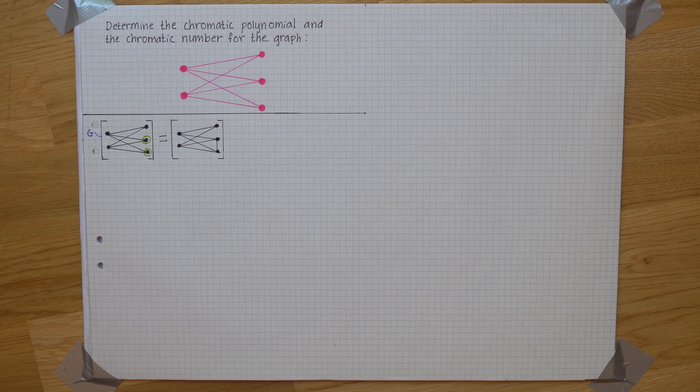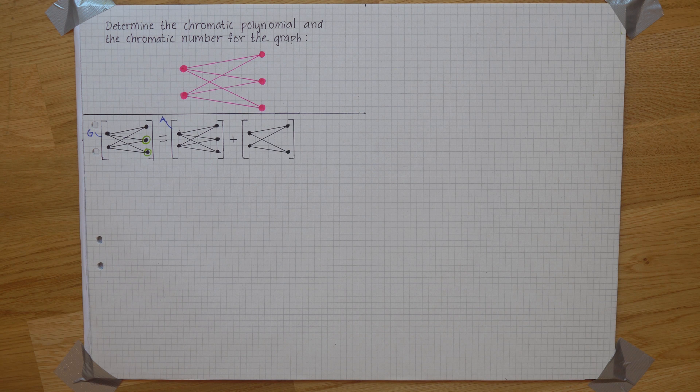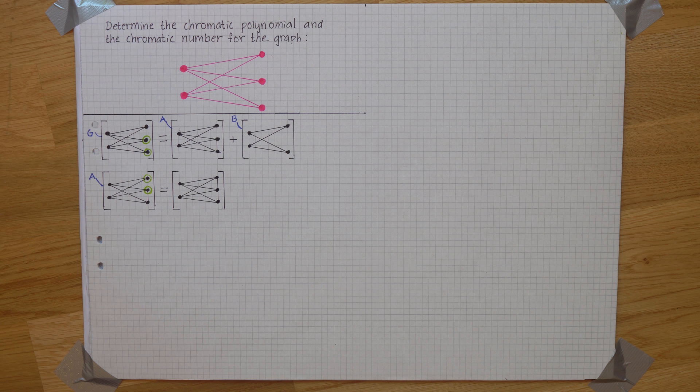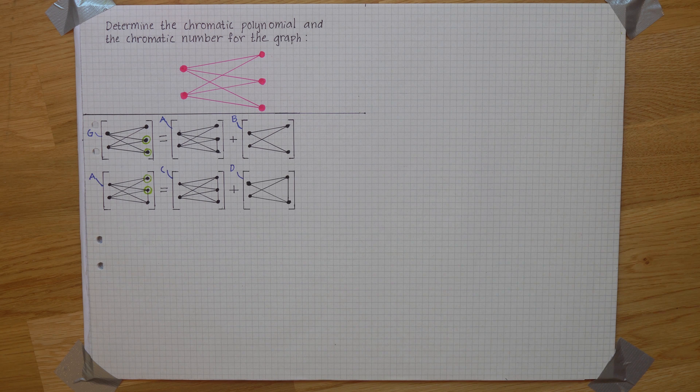That is allowed if we then add the same graph but with those nodes merged. We'll call these new graphs A and B. Then we take A where we add a connection between these two nodes giving us the new graphs C and D.